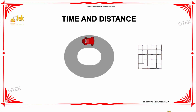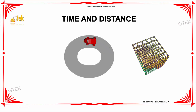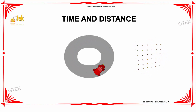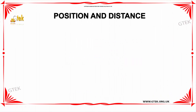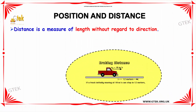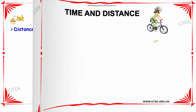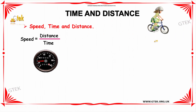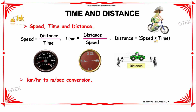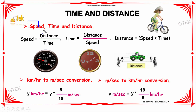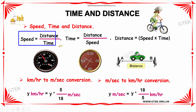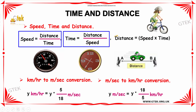Let us discuss about time and distance. Distance is a measure of length without regard to direction. The keywords used in time and distance are speed, time, and distance, which are given by the expressions: speed is equal to distance divided by time, time is equal to distance divided by speed, and distance is equal to speed multiplied by time.